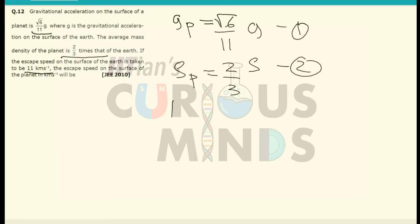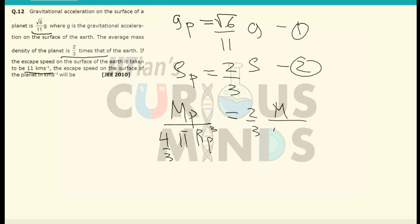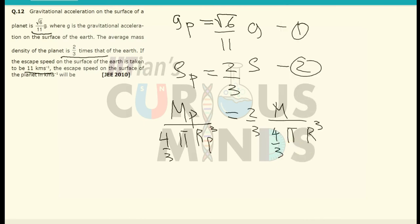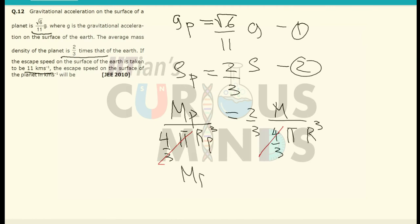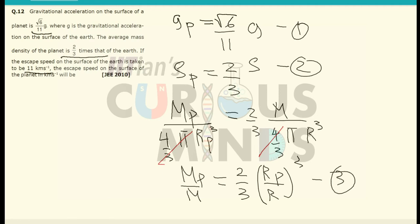The density is equal to mass upon volume. So mass of the planet divided by volume of the planet — volume of the planet is 4/3 π rp³ — is equal to 2 by 3 times mass of the earth divided by 4/3 π re³. So mass of the planet divided by mass of the earth equals 2 by 3 times (rp/r)³. Let this be equation number 3.